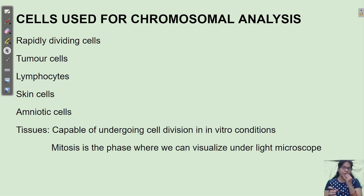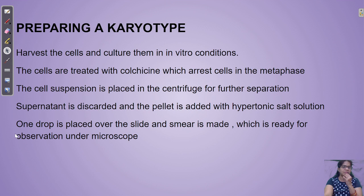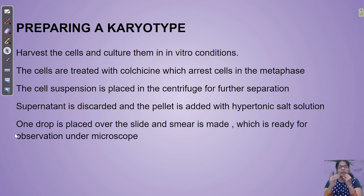Tissue cells can also be taken for karyotyping study — those tissues undergoing in vitro conditions, where you provide an artificial atmosphere for cells to multiply. A particular tissue is taken and given proper nutrition so it starts multiplying in vitro. We can then arrest the metaphase by adding chemicals like colchicine, which arrests cells at the metaphase condition.